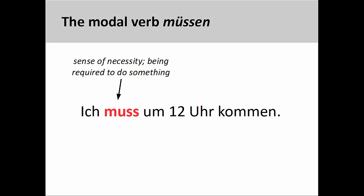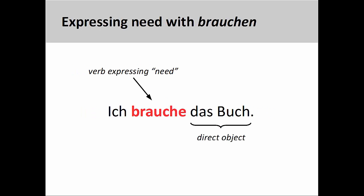The modal verb müssen conveys a sense of necessity, a sense of being required to do something. In the sentence you see on the screen, Ich muss um 12 Uhr kommen, it is necessary that the subject of the sentence come at 12 o'clock. It is important to note that when expressing need, müssen cannot be used with a direct object — it only works with an infinitive: 'I need to come at 12 o'clock.' To express need with a direct object, you must use the verb brauchen: Ich brauche das Buch — I need the book.